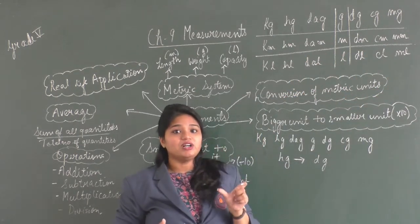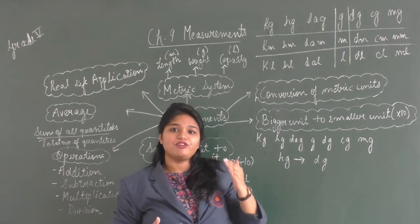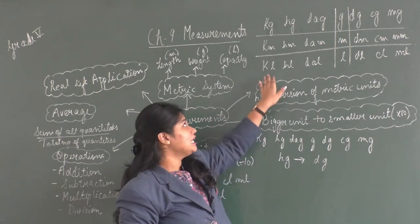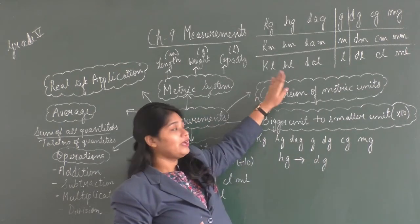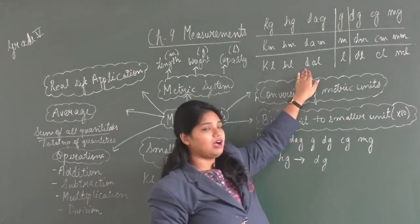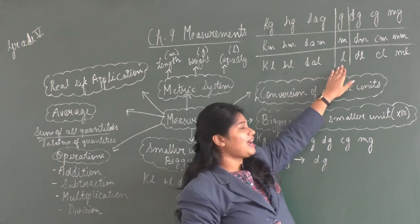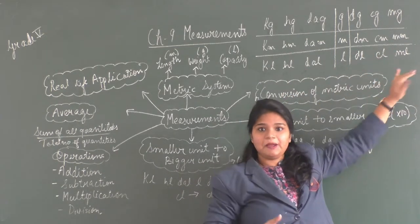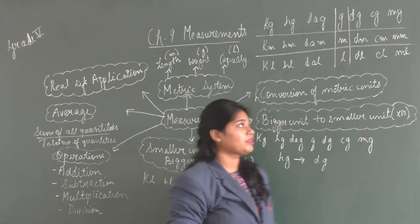The prefix words are the same for all metric systems: kilo, hecto, deca, then the standard unit, then deci, centi, and milli.